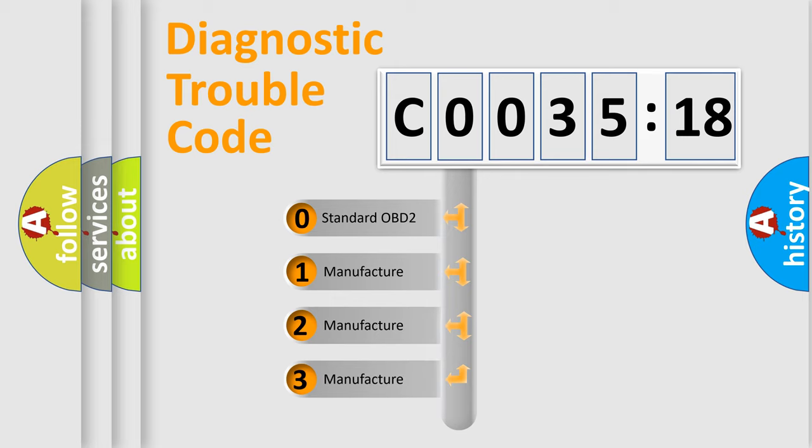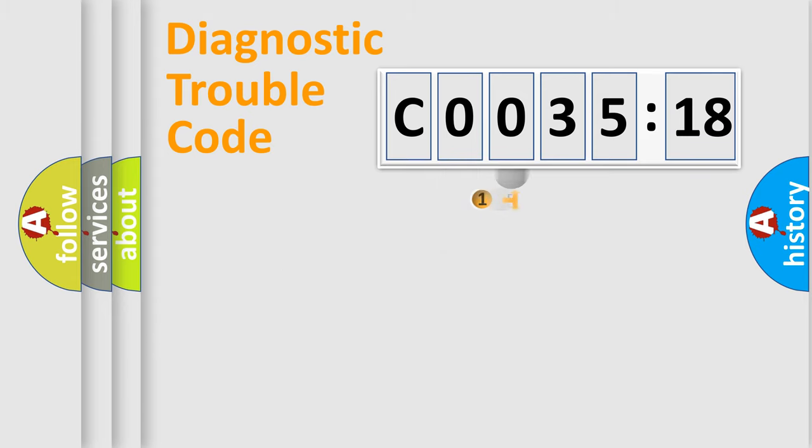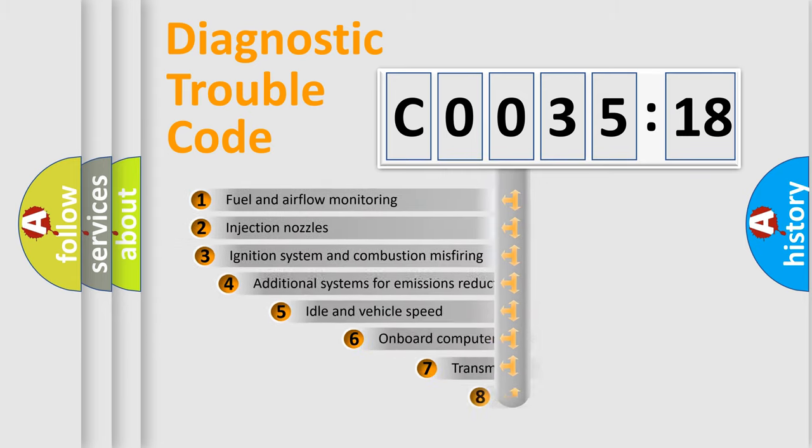If the second character is expressed as zero, it is a standardized error. In the case of numbers 1, 2, 3, it is a manufacturer-specific expression of the car-specific error.